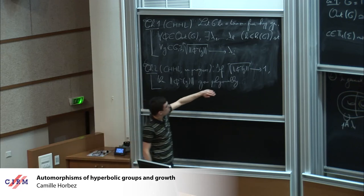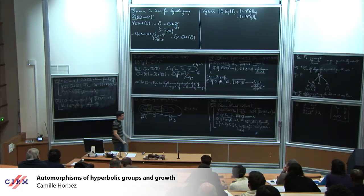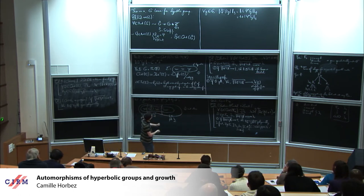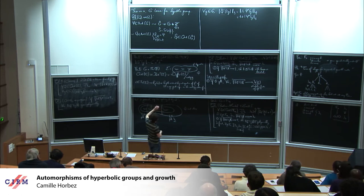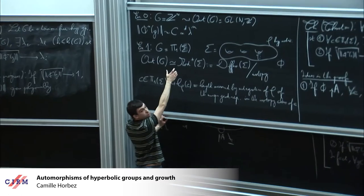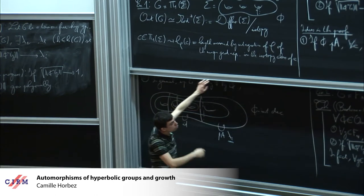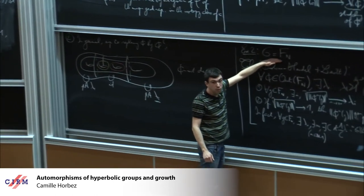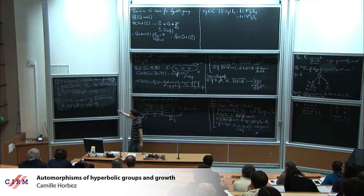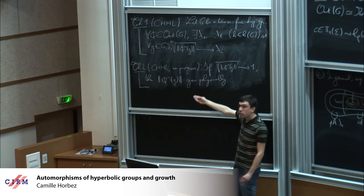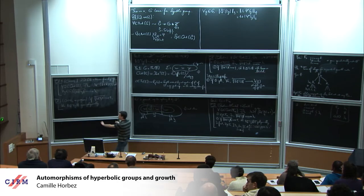The second statement — still in progress — is that you have a dichotomy between exponential growth versus polynomial. If you have an element that grows sub-exponentially fast, its growth is polynomial, with a bound on the degree depending only on the group. There is a distinction between one-ended groups like the fundamental group of a closed surface, and infinitely-ended groups like free groups. What we show is that if G is one-ended, then when growth is polynomial it is actually linear; when the group is not one-ended, you can have higher degree polynomial growth.